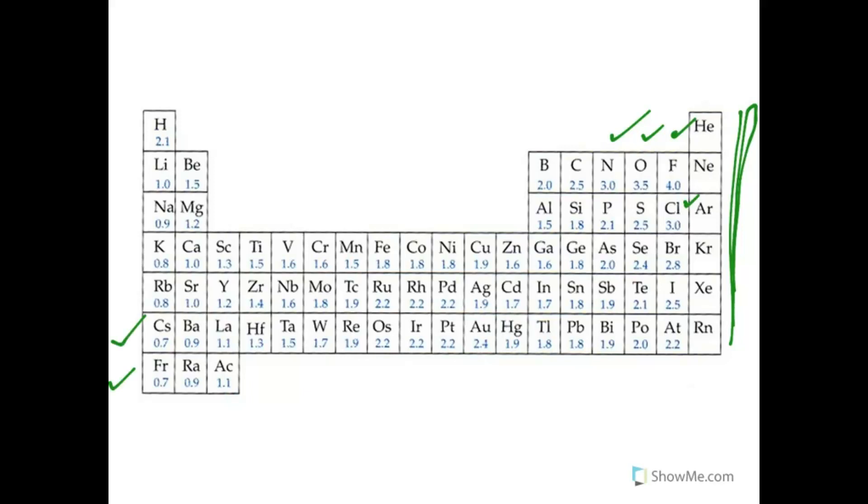You can note in this diagram that as we move across the periodic table, electronegativities tend to increase. As you move down the table, they tend to decrease. This is in much the same way as ionization energy, which makes sense if you think about it.